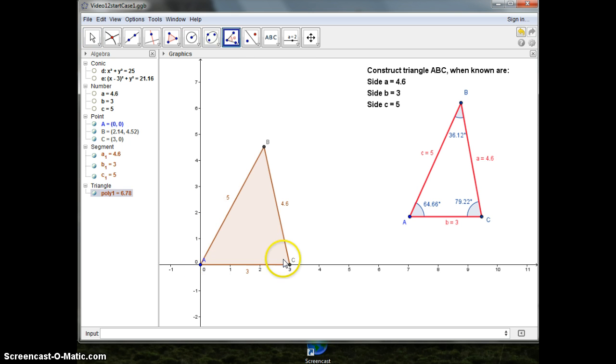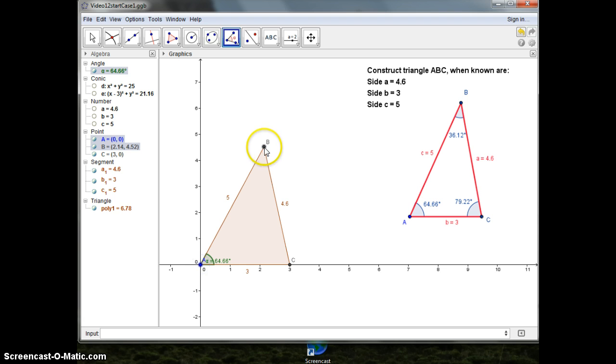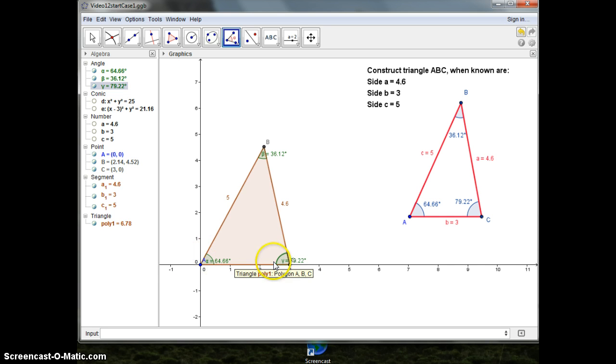I also want to measure an angle. And you should do it in the right order. C, A, B, that angle. A, B, C, that angle. And B, C, A, in that angle. If you do it the other way around, you'll get the opposite angle. Now, about the angles.